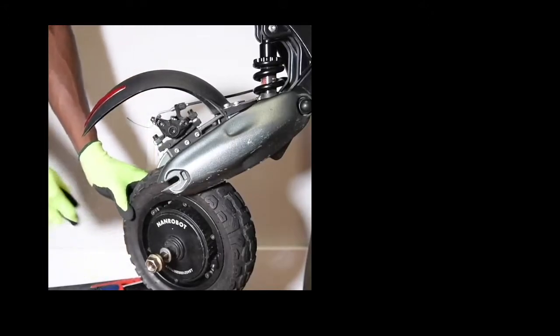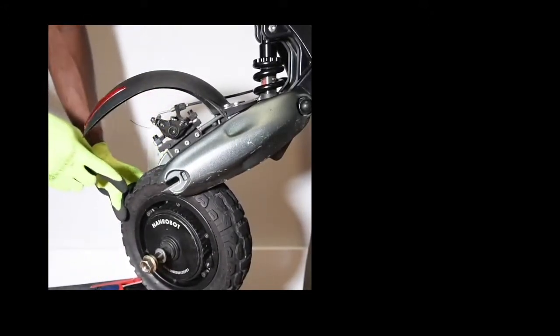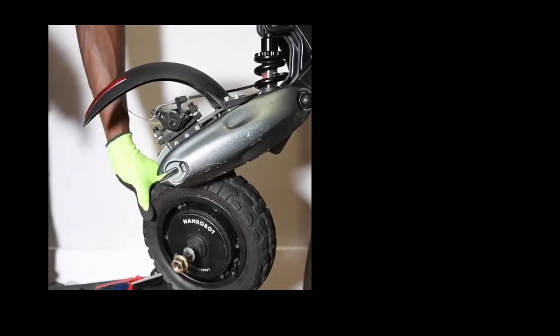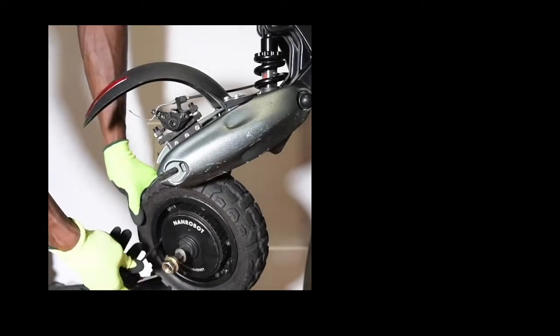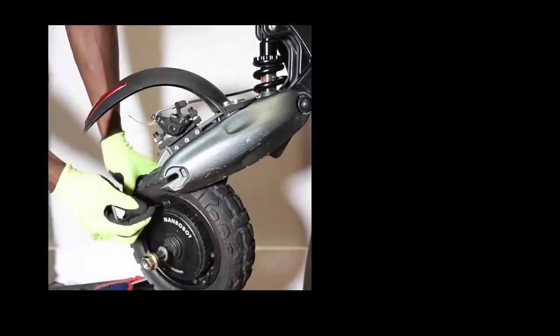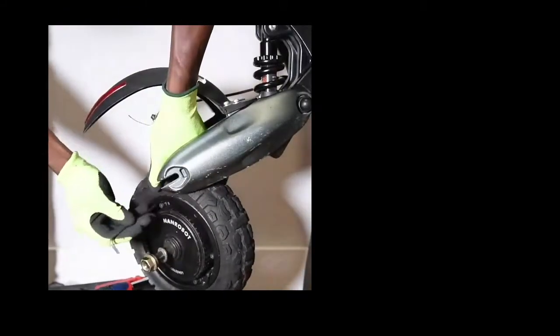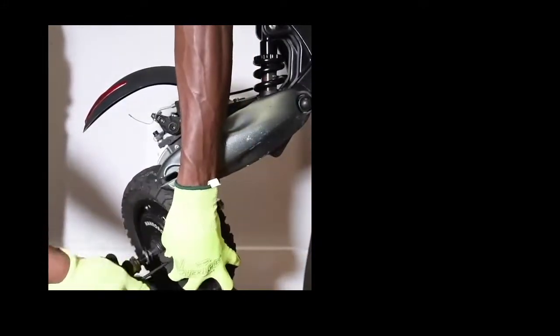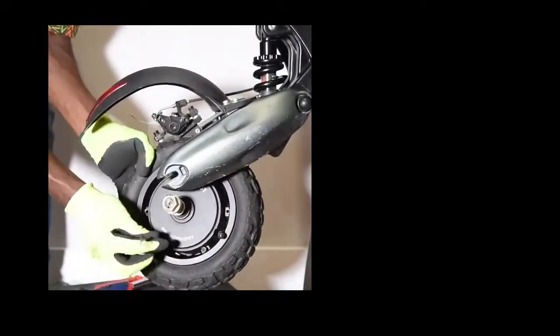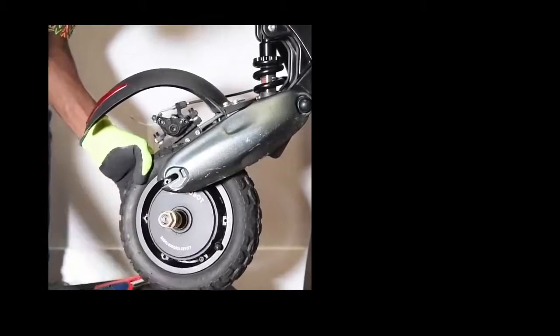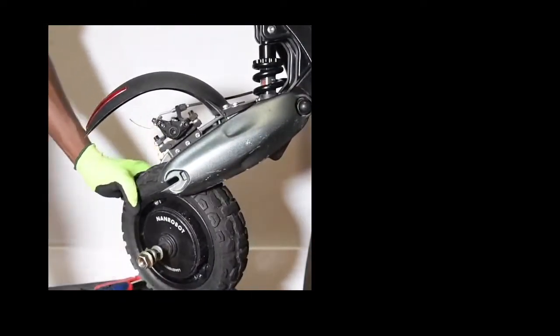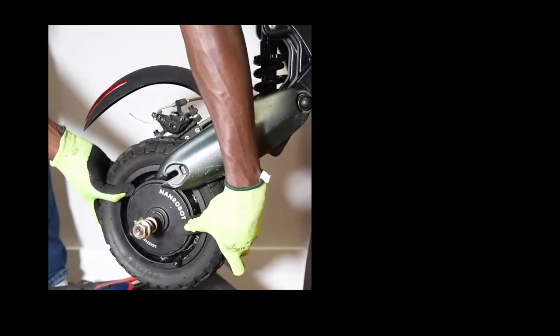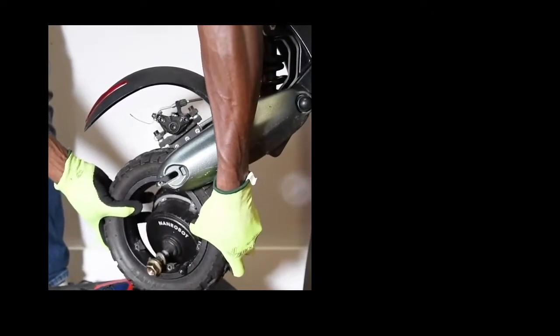Sometimes you need to take off this little screw here. Over there. So now let's take off this screw. After you take off all the screws, the wheel will come out easily like that.